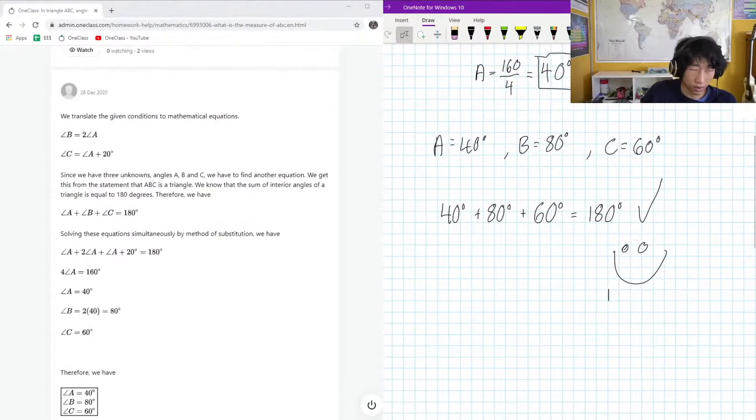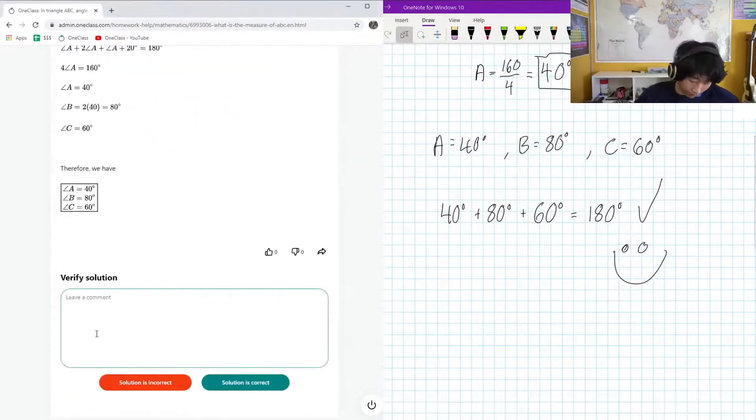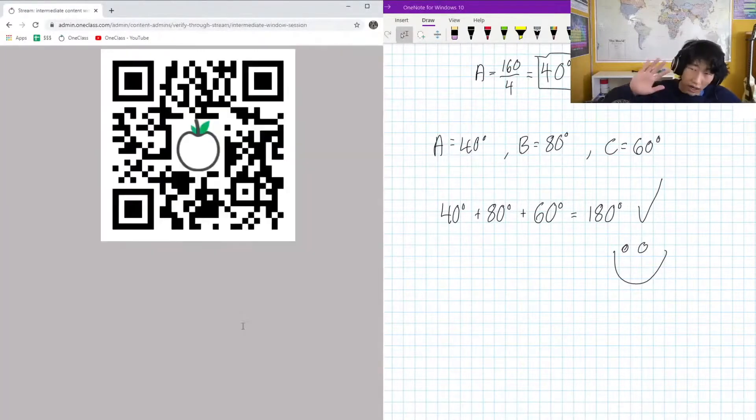Awesome. So 40, 80, 60. Perfectly exactly what we got. That's good. And big happy face. Good job. Awesome. The above solution is good. Good job. High five.